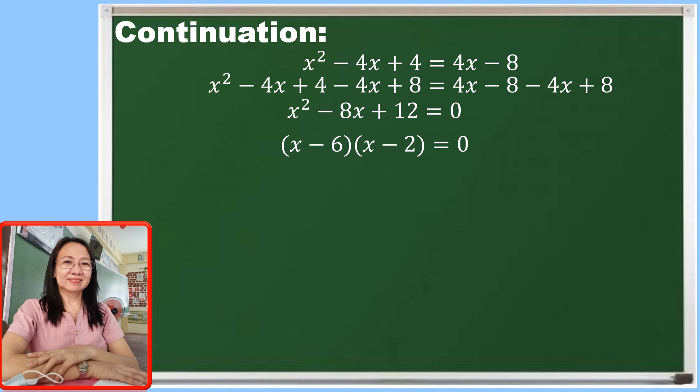Now, what are the factors of the result? This will give us the quantity of x minus 6 times the quantity of x minus 2 is equal to 0. You may recall this from our first quarter topic. Now let us apply the zero factor theorem. For x minus 6 is equal to 0, we will get x is equal to 6. For the other factor, x minus 2 is equal to 0, then x is equal to 2.